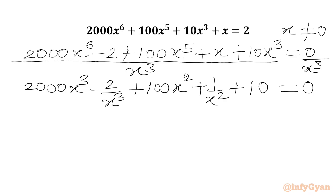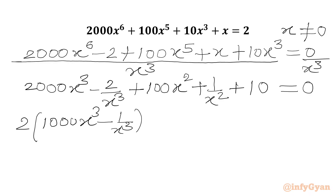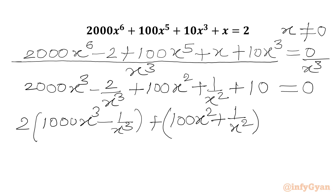Now we can take 2 common from the first two terms. So I can write 2 times the bracket containing 1000x³ minus 1 over x³, then 100x² plus 1 over x², then plus 10 equal to 0.